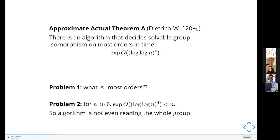Here's the first approximation of the general theorem. We have an algorithm that, given these solvable groups, solves isomorphism in time exponential of O((log log n)^4). If you know anything about log logs, you know that's the result of number theory — specifically the Brune sieve is behind this double log. The rest I'll leave to your own private reading.